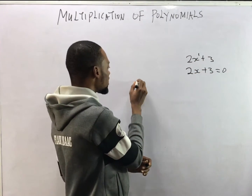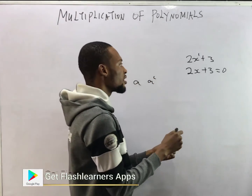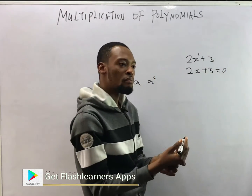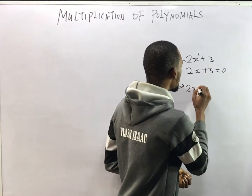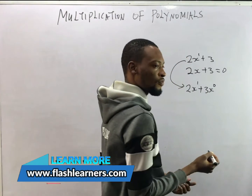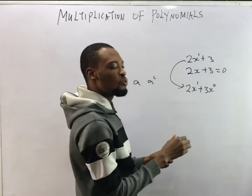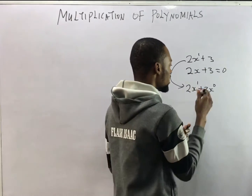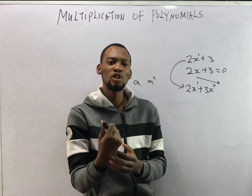If I give you something like 'a', it is the same thing as a raised to the power of 1. Now s is s raised to the power of 1, while the constant 3 still carries s but the power is 0. So I can rewrite this expression as 2s raised to the power of 1 plus 3s raised to the power of 0, because s raised to the power of 0 is 1. You can see that the power of the variable is descending: 1 and 0.